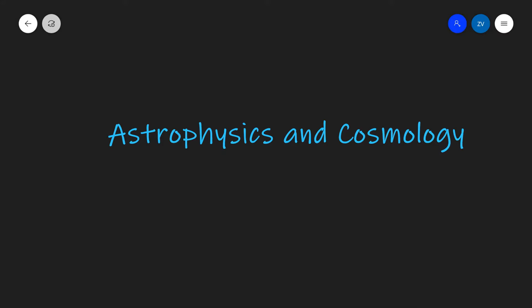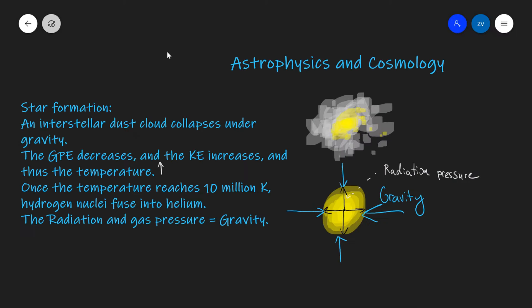Let's get started with astrophysics and in particular with stars. A star is formed when an interstellar dust cloud collapses under the force of gravity. The gravitational potential energy will be decreasing, and thus the kinetic energy will be increasing, and hence the temperature as well. Once the temperature reaches 10 million Kelvin, hydrogen nuclei are going to fuse into helium. At that point the radiation pressure and the gas pressure equal the force of gravity, and we have a star which is born.